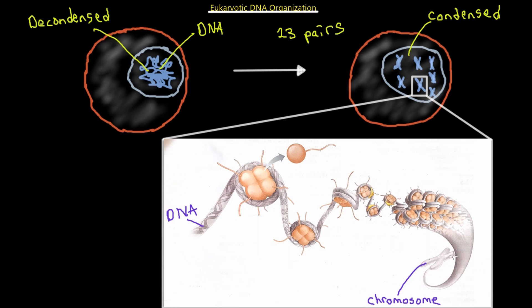Then if we were to unravel it, or if we were to zoom in on the condensed chromosome, this structure here is called the solenoid. And the solenoid has various features here.